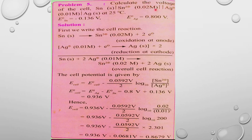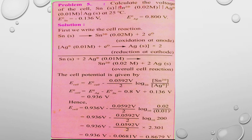Problem 5: Calculate the voltage of the cell — tin electrode dipped in 0.2 molar Sn²⁺ solution and silver electrode dipped in 0.01 molar Ag⁺ solution at 25°C. We need to find the cell potential (EMF of the cell).